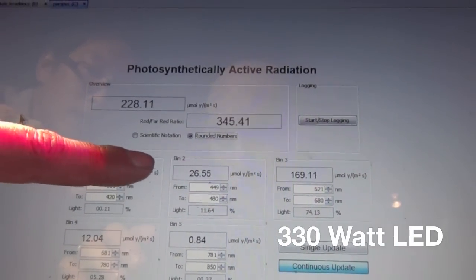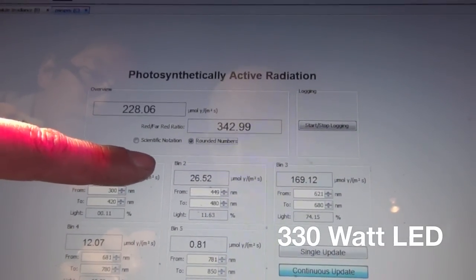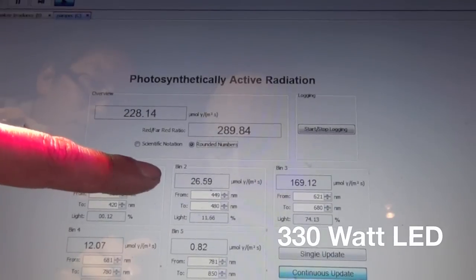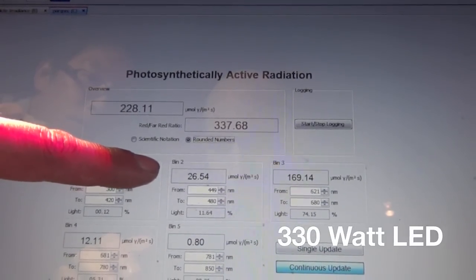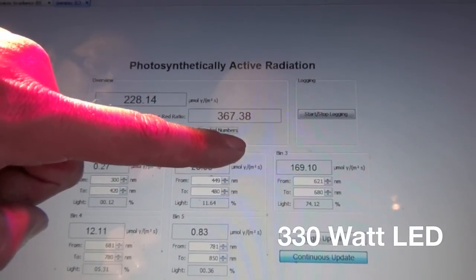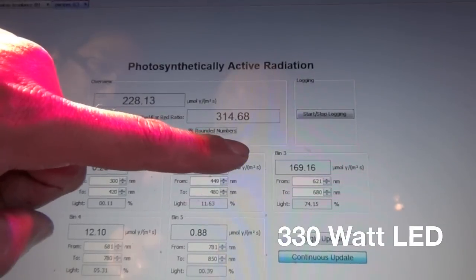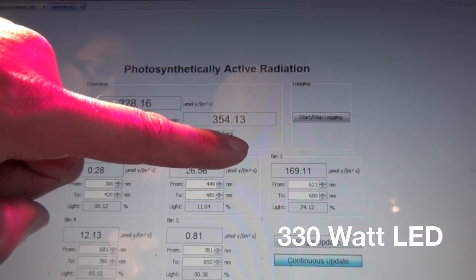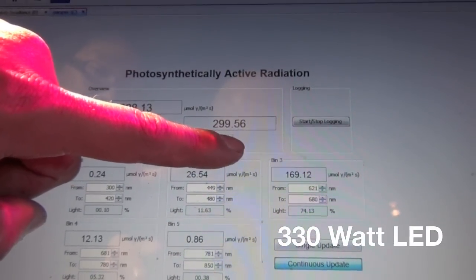We have about 26.5 micromoles of blue between the 450 and 480 nanometer wavelengths. And in bin 3, which is the red, we have about 170 micromoles of red between 620 and 680 nanometers.